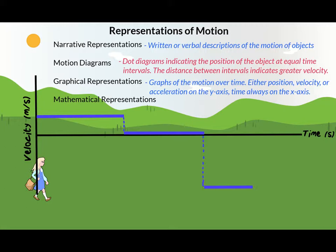Then Amber began running back to where she started, so we show again a constant velocity — but we must show it in the negative direction, and it must be greater in magnitude than the first velocity. When Amber slows back to a walk, we see on the VT graph a lower-magnitude negative constant velocity.